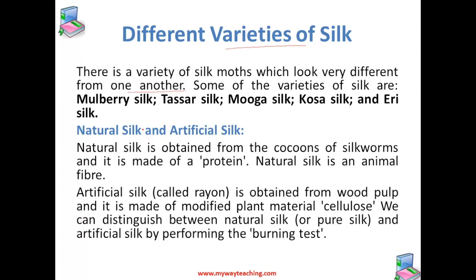Some of the varieties of silk that we come across are mulberry silk, tussah silk, moonga silk, gosa silk, and eri silk. These silks are produced from the cocoons spun by silkworms of different types of silk moth. The most common variety of silk found is mulberry silk.